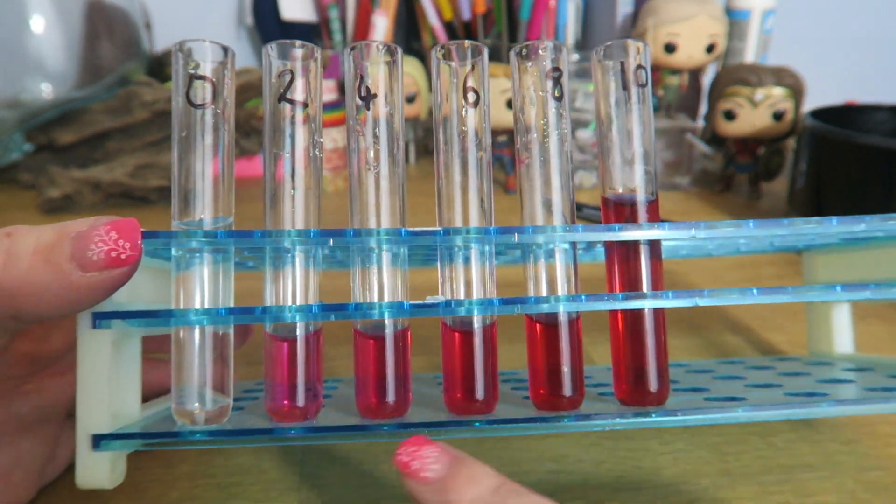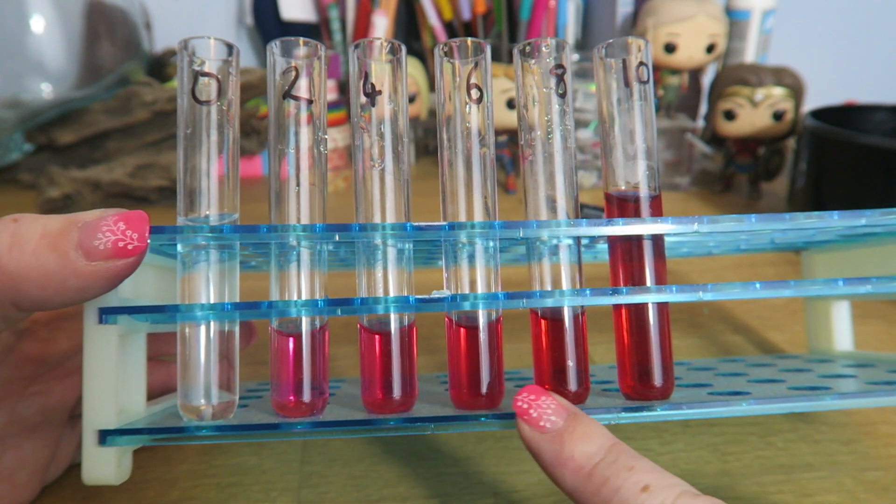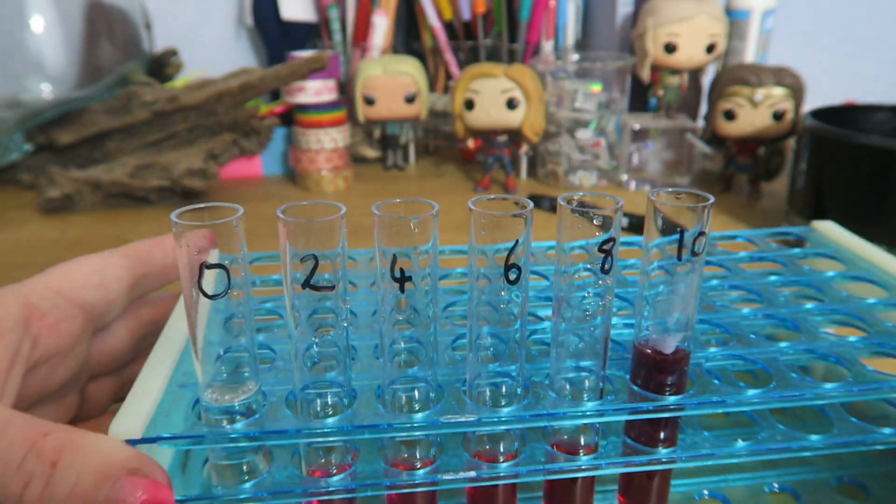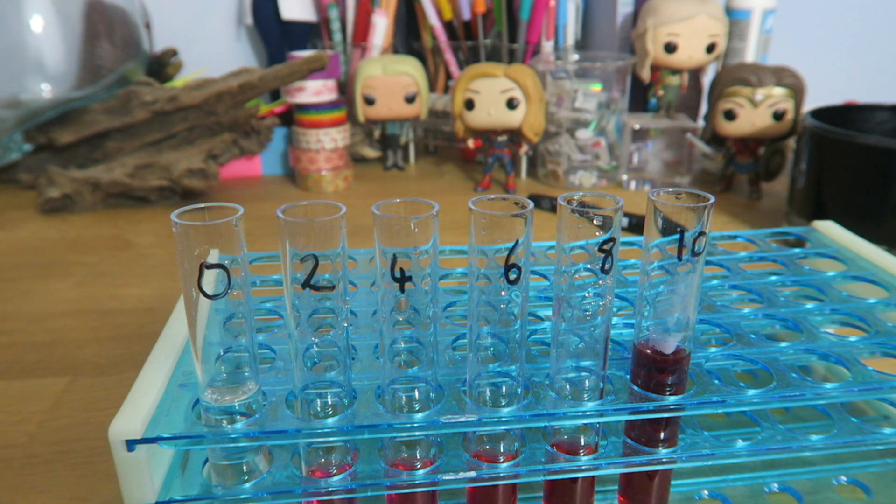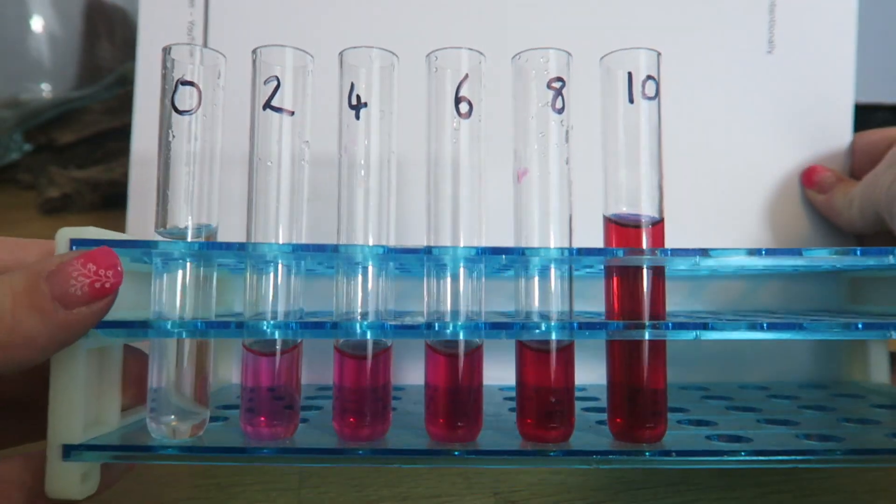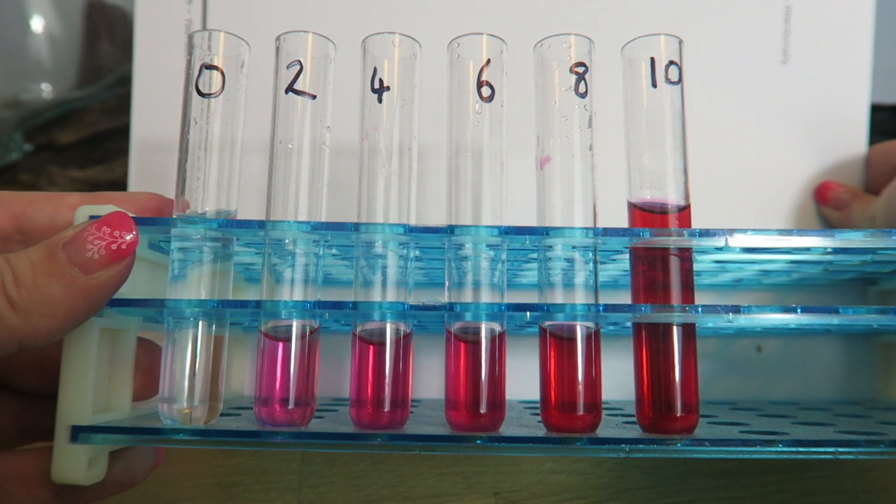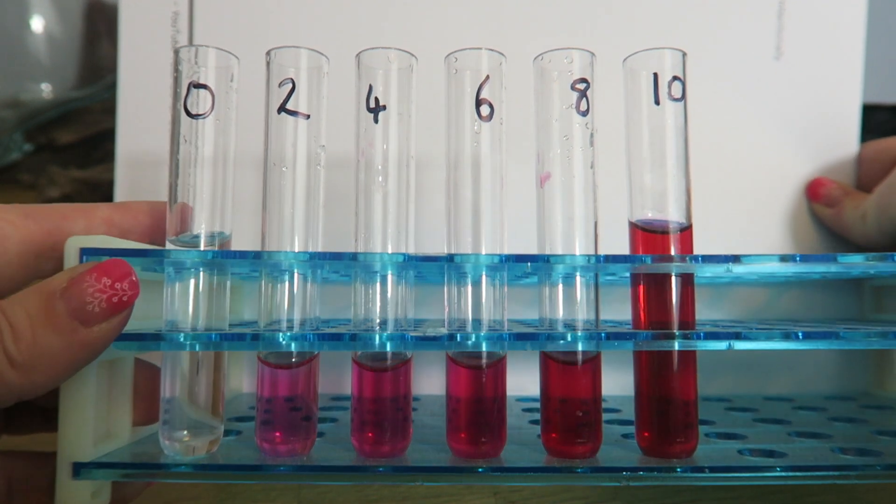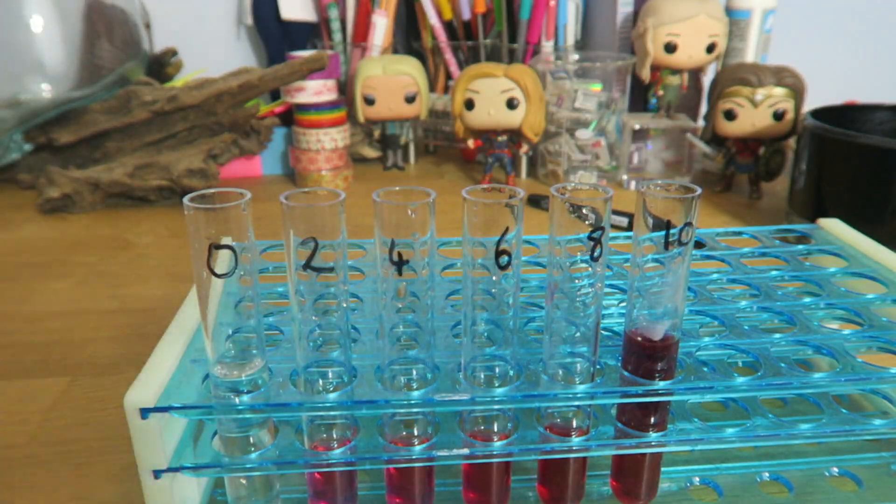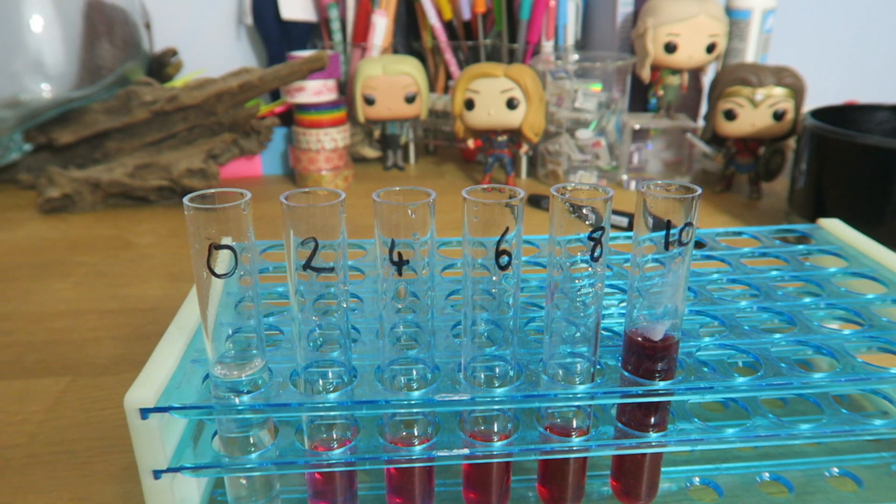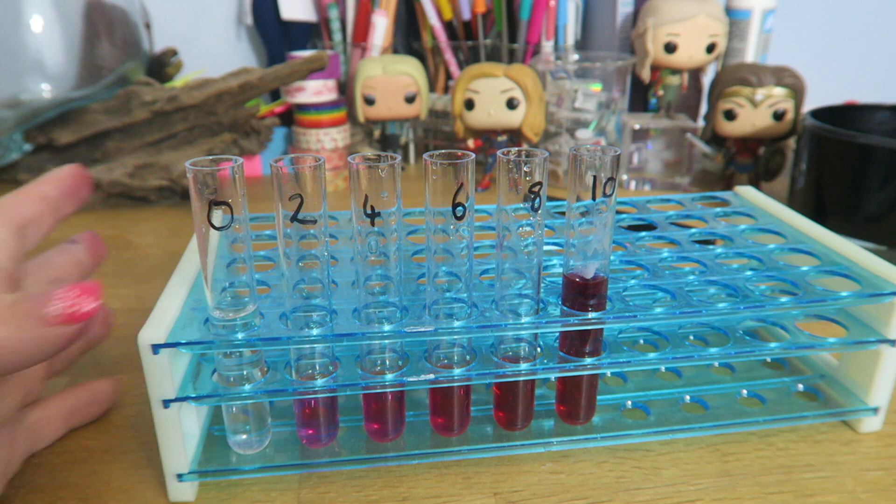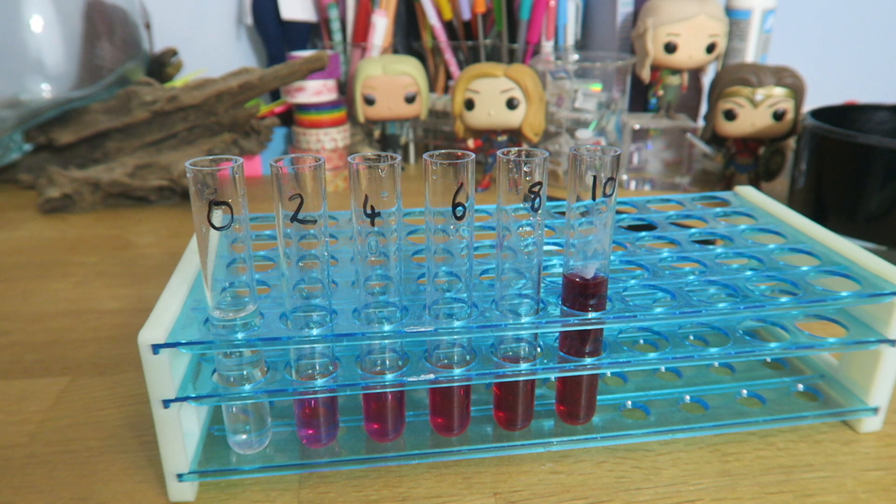You should now be able to see a gradient of colour across here. I'll just get some white paper, stand that behind, and you should be able to see that colour gradient a little bit better. White paper is really helpful for helping you work out things. So, this is part one. That's our standard colours. Yours may look slightly different. That is fine, as long as you've done this carefully, as long as you've done it properly. And now we can move on to part two.